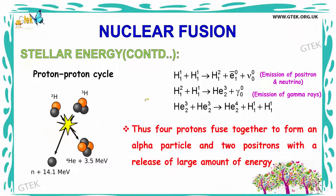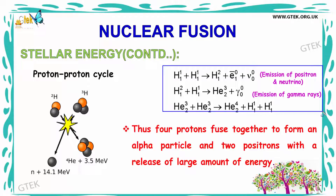The proton-proton cycle involves the emission of positrons and neutrinos, and the emission of gamma rays. You can see the reaction where the positron and neutrino are emitted from the reaction of hydrogen and deuterium. In the second reaction, gamma rays are emitted. Thus, four protons fuse together to form an alpha particle and two positrons with the release of a large amount of energy.